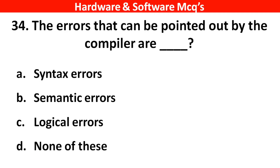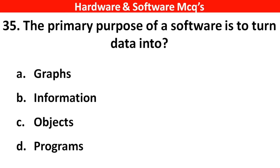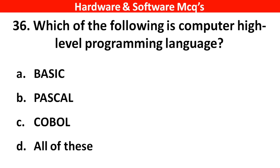Next question: The errors that can be pointed out by the compiler are ___. The right answer is option A — syntax error. Next question: The primary purpose of software is to turn data into? The right answer is option B — information. Next question: Which of the following is a computer high-level programming language? The right answer is option D — all of these.